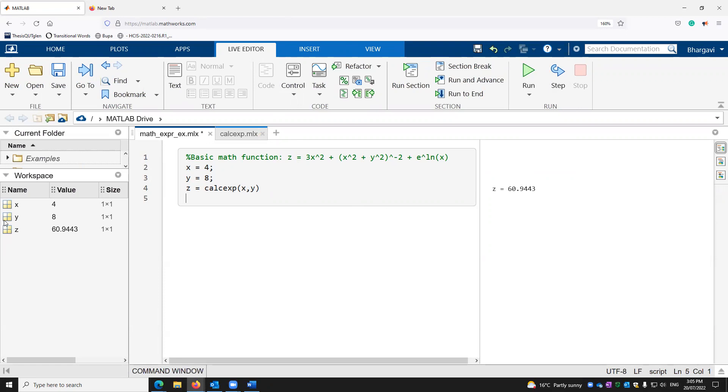We can see that x and y are also replaced here, which was earlier 2 and 2. And now for x equals 4 and y equals 8, we have z is equal to 60.9443. Thank you.